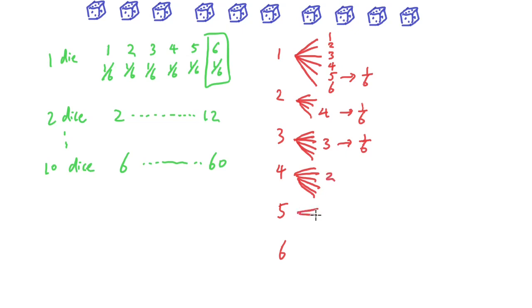Similarly for 4, 5, and 6. For 2 dice, the probability that the sum of 2 dice being divisible by 6 is again 1 over 6.